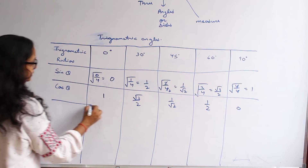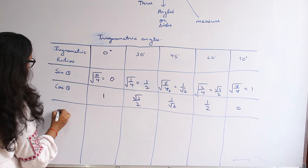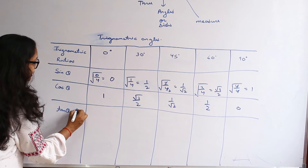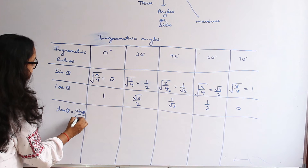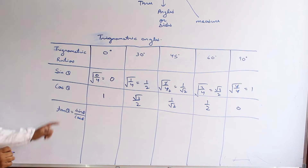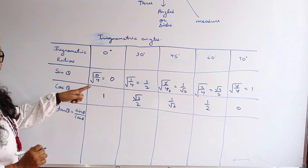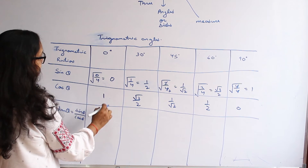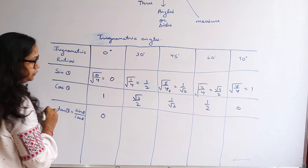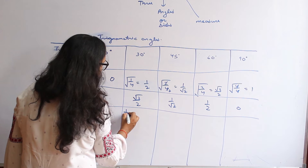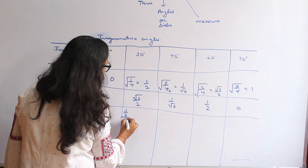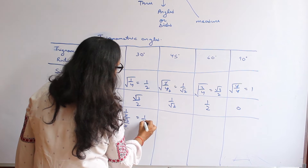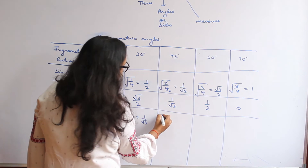Next is tan theta. Tan theta equals sin theta over cos theta. Calculating: at 0° it is 0 over 1 = 0; at 30° it is (1/2) over (root 3/2) = 1 over root 3; and at 45° the twos cancel giving 1.